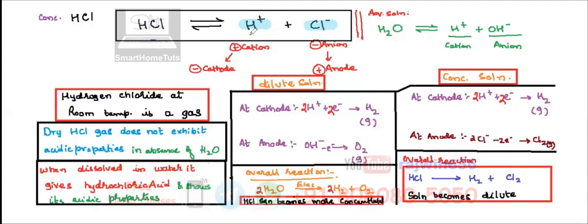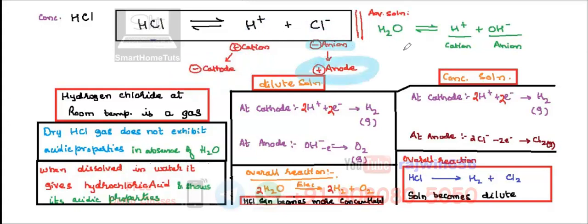H+ is obviously a positive ion, that is a cation, so it is going to go to the cathode. Similarly, chloride Cl- is a negative ion, that is an anion, therefore it is going to go to the anode.